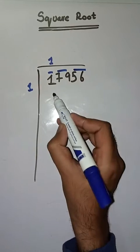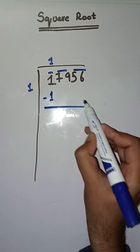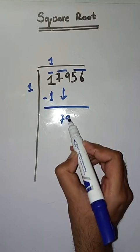One ones are one. One minus one, we get zero. Next pair is 79, we bring it down.